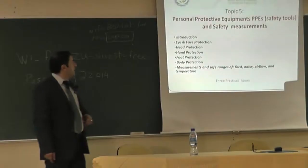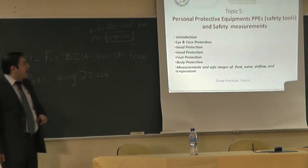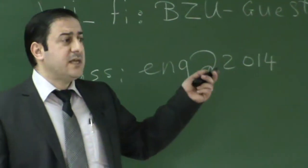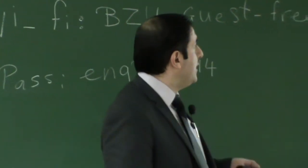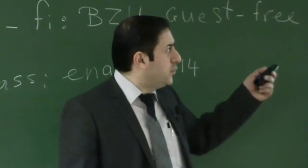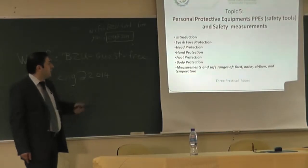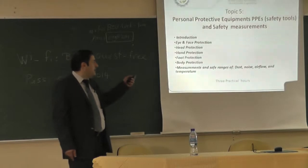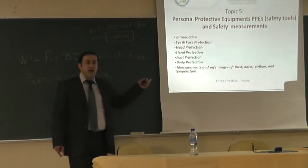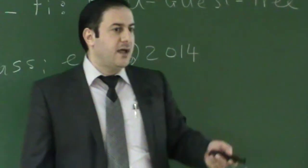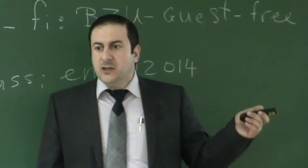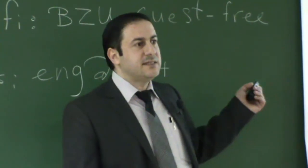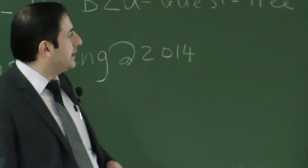Topic five, the final topic, covers personal protective equipment, safety tools, and safety measurements. We will introduce eye and face protection — the importance of protecting the eye and face during work and the accidents that may occur. We will also cover head protection, hand protection, foot protection, and body protection. Finally, we will talk about safe ranges for measurements of dust, noise, airflow, and temperature, and we may use equipment available at Birzeit University or Al-Najah to take measurements on site and compare whether readings are within safe ranges. This topic is three practical hours.